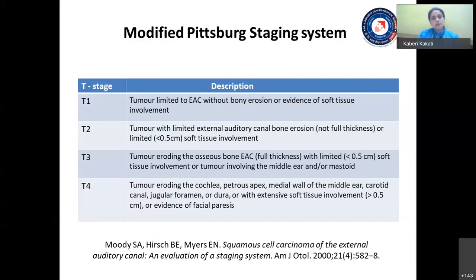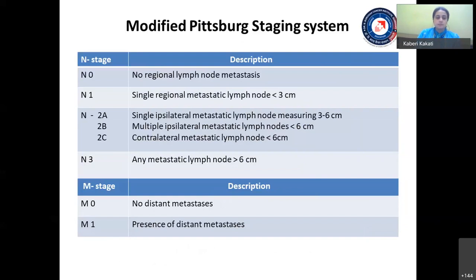In the modified Pittsburgh staging system: T1 includes tumors limited to the ear canal without bony erosion or soft tissue involvement; T2 tumors have limited external auditory canal erosion (not full thickness) or less than 0.5 cm soft tissue involvement; T3 tumors erode the osseous bone of the ear canal with full thickness bone erosion and limited soft tissue involvement, or involve the middle ear and mastoid; T4 tumors erode the cochlea, petrous apex, extend extratemporal to involve the parotid, jugular foramen, or dura with extensive soft tissue involvement and evidence of facial paresis. The N and M stages are similar to the AJCC classification.